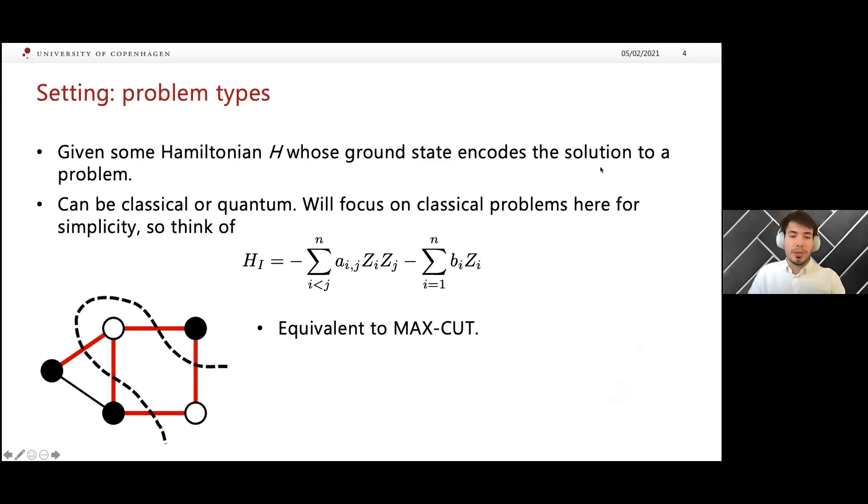This is equivalent to max cut, so in particular, many NP complete optimization problems. We want to minimize this energy where phi D here is just the output of the depth quantum circuit with initial state rho. We are in the setting where there's no error correction, which will be crucial for the results presented here.